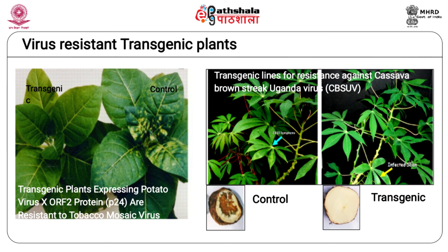Mutated P24 protein, a movement protein of potato virus X (PVX), was expressed in transgenic tobacco plants. Upon inoculation with tobacco mosaic virus (TMV), the size of necrotic local lesions was significantly smaller in P24 positive plants than in non-transgenic control plants. Similarly, an RNAi construct targeting the near full-length coat protein of CBSuV was expressed constitutively as a hairpin construct in cassava. Transgenic cassava lines expressing siRNAs against this sequence showed 100% resistance to CBSuV.